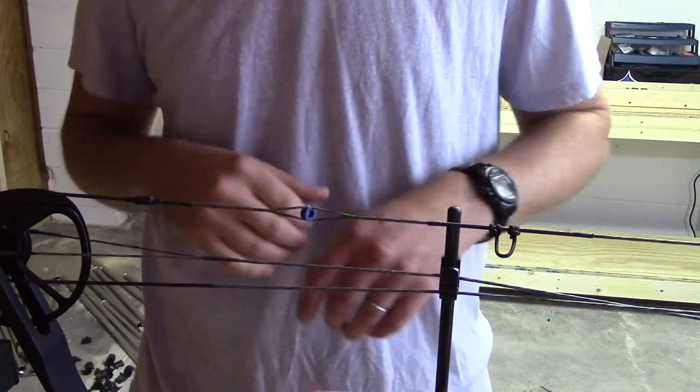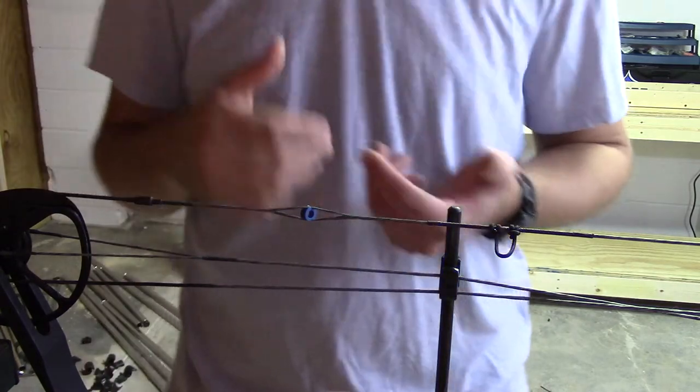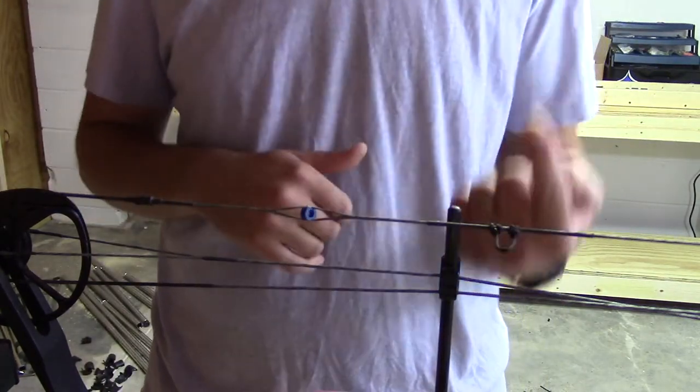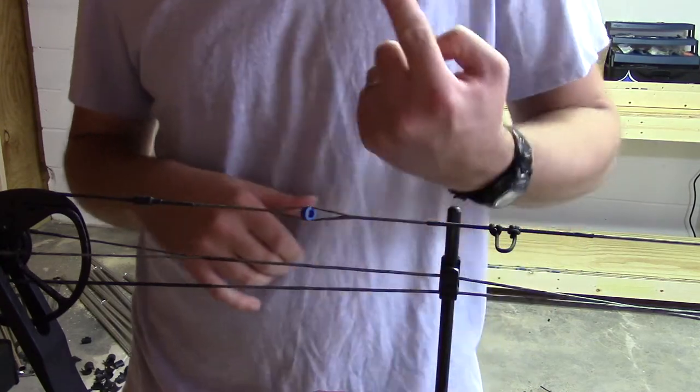I have the peep now, I just drew the bow back a couple of times. Now I can serve it in, but you notice something, that the D-loop and the peep are facing at you. They need to be facing 90 degrees from where they are.